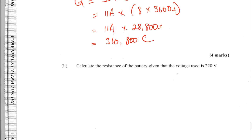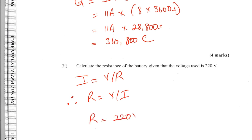Question C2: calculate the resistance of the battery given a voltage of 220 volts. Using Ohm's law — current equals voltage over resistance, so R = V/I. The resistance = 220 volts / 11 amps = 20 ohms.